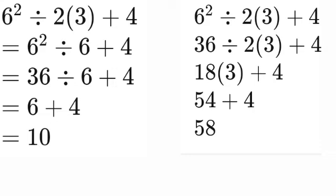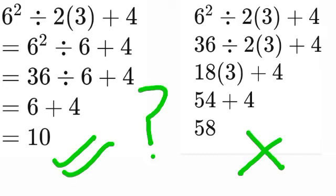Which one is right, 10 or 58? According to the rules, the answer is 10. Ten is the right answer. This is based on BODMAS.